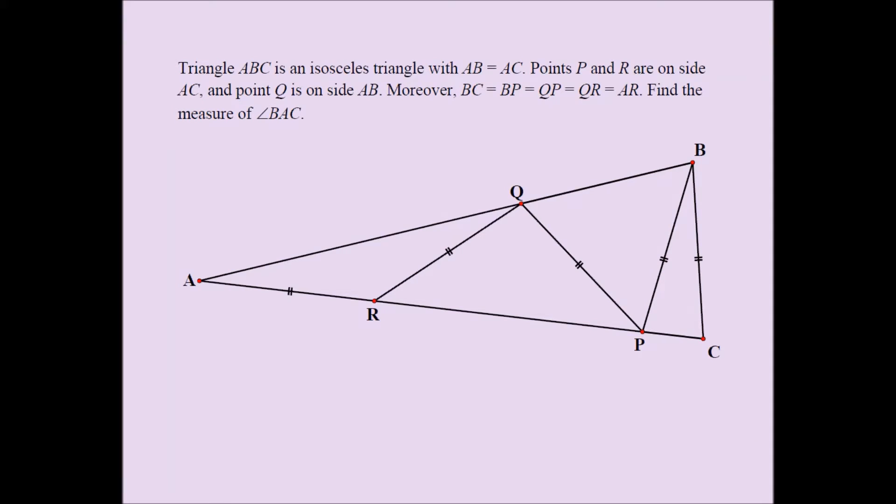Triangle ABC is an isosceles triangle with AB equal to AC. Points P and R are on side AC and point Q is on side BC. Moreover, BC is equal to BP, is equal to QP, is equal to QR, is equal to AR. Find the measure of angle BAC.